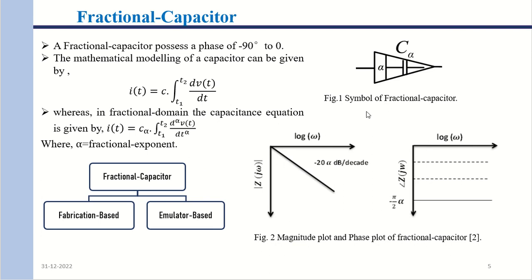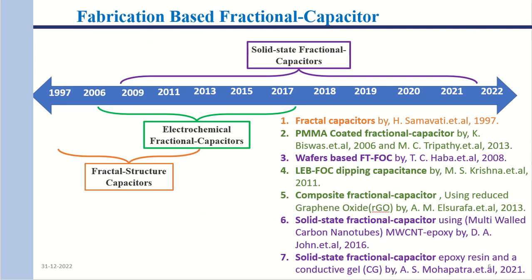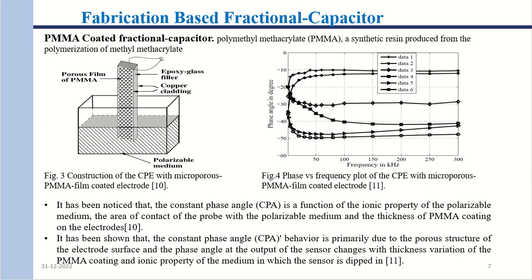The symbol of a fractional capacitor is shown in figure 1, and the magnitude and phase plot is seen in figure 2. These are eminent researchers and their work from 1997 to 2022 on fabrication-based fractional capacitors. In 2008, a PMMA-coated fractional capacitor was designed by K. Biswas, who used a polymer film coated electrode in a porous solution, and the capacitor showed a constant phase behavior from −10° to −40°.